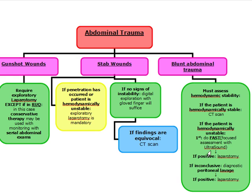Here's where it gets tricky: if the patient is hemodynamically unstable, the first step is FAST — Focused Assessment with Sonography in Trauma — not diagnostic peritoneal lavage. If the FAST is positive, go to laparotomy. If the FAST is inconclusive, then you proceed to diagnostic peritoneal lavage. If the DPL is positive, go to laparotomy. The only time you go directly to peritoneal lavage is if FAST is not listed as an answer choice. If both are listed, always choose FAST first.